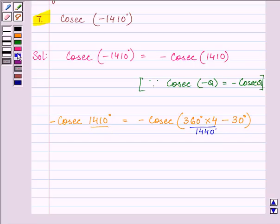Further, it can be written as minus cosec of minus 30 degrees, because cosec of 360 times 4 minus 30 equals cosec of minus 30.